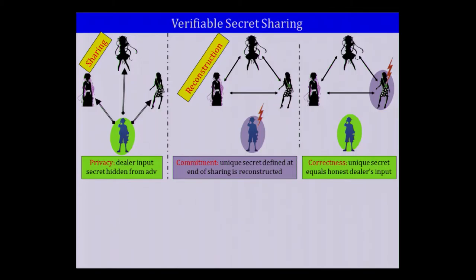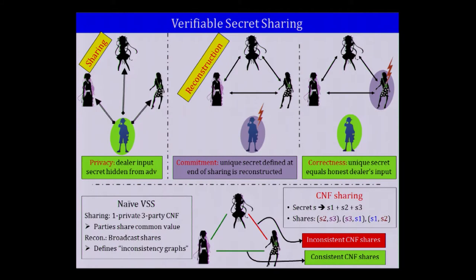Starting with a naive VSS protocol: in the sharing phase, the dealer does a one-private three-party CNF sharing, so parties share common values. In the reconstruction phase, parties simply broadcast their shares. Because CNF shares have common parts, this naturally defines an inconsistency graph: depending on whether two parties broadcast CNF shares with matching or distinct common parts, edges are labeled green or red.